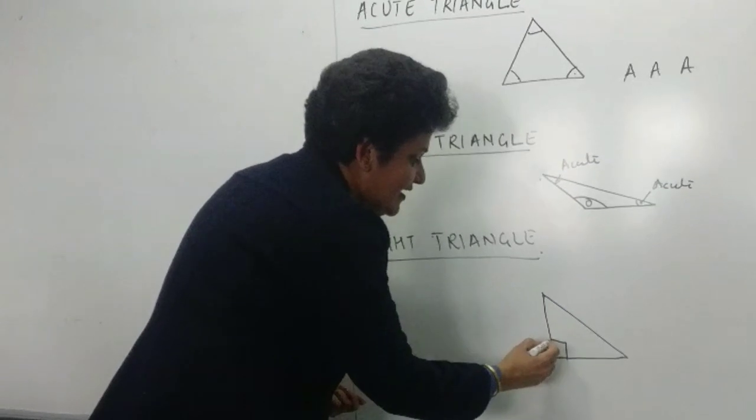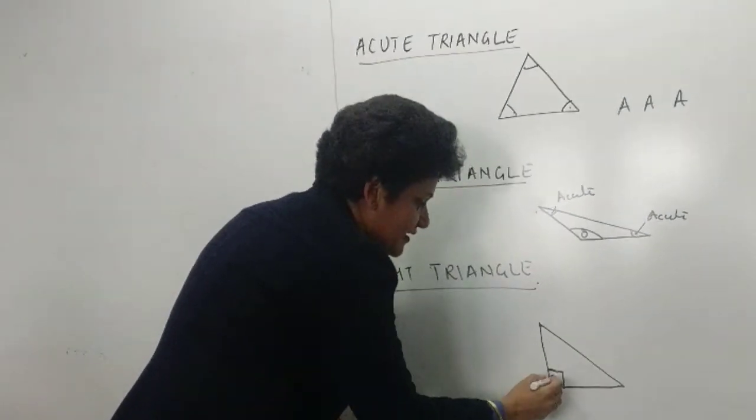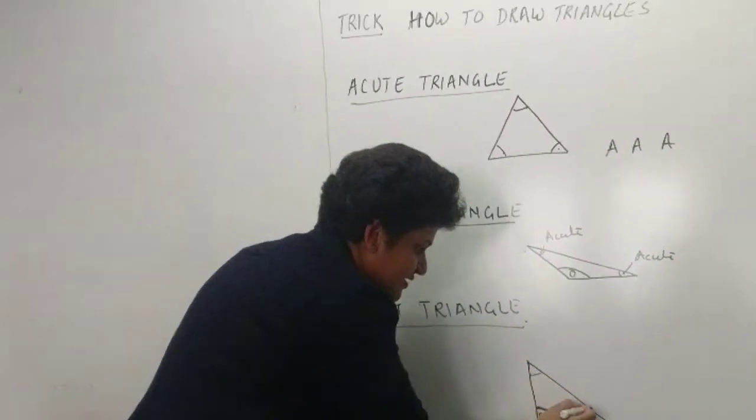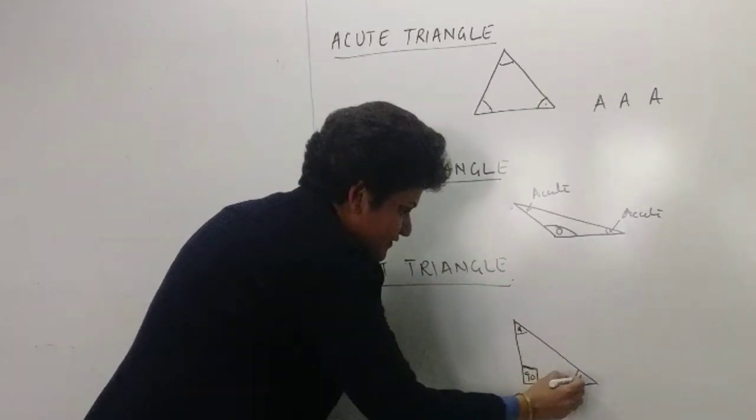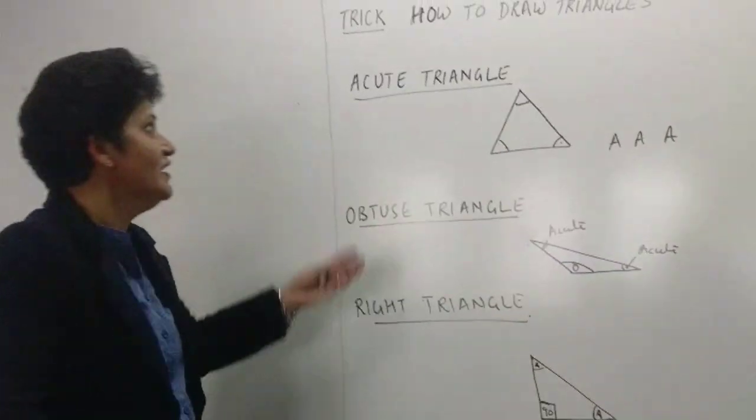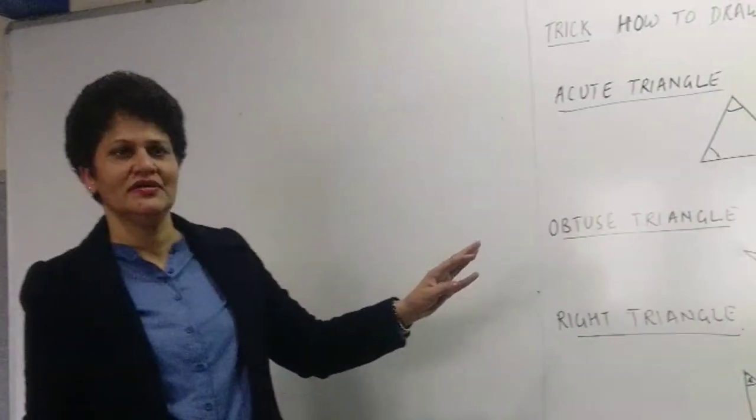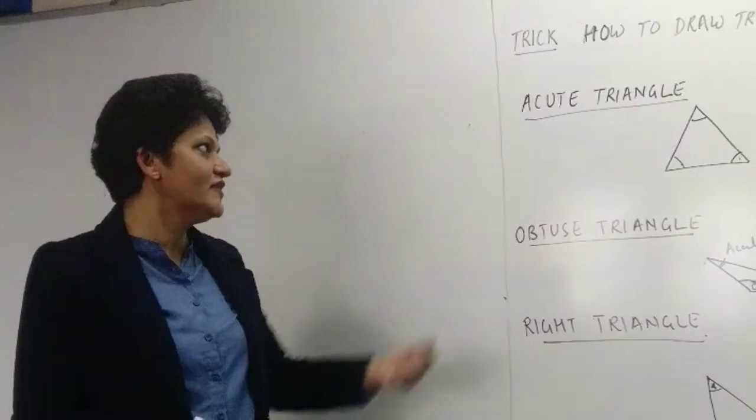Very good. And then if this is 90 degrees, tell me about these two angles. Will they be acute or obtuse or what? Acute. So this is also an acute. This is also an acute.